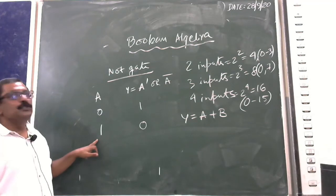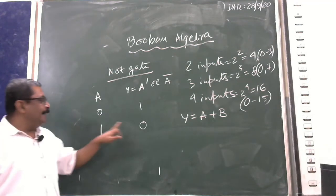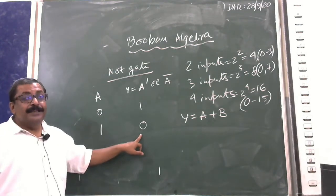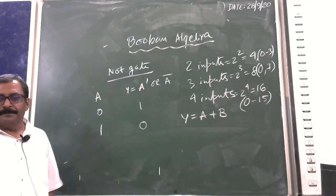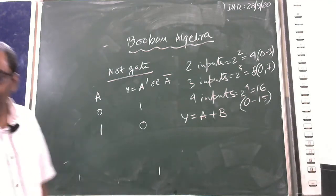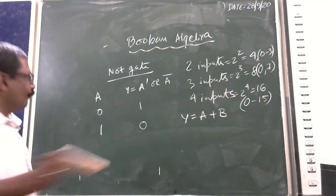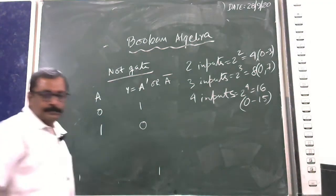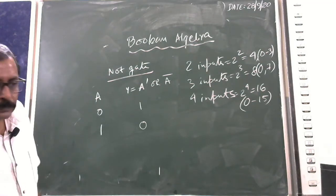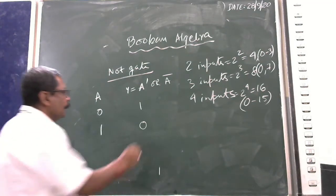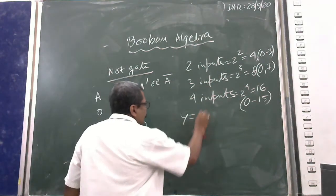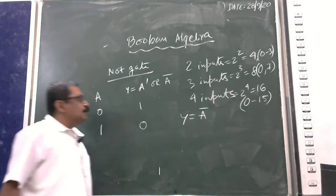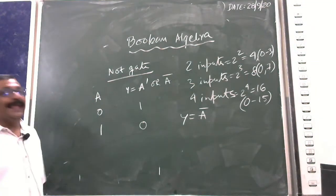If the input is 1, then the output will be 0. The output Y is equal to A-bar.